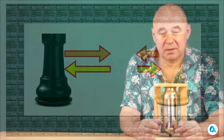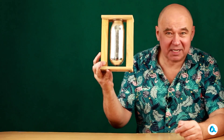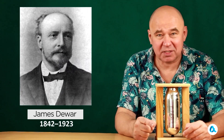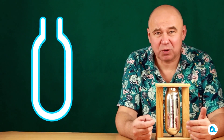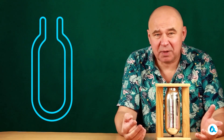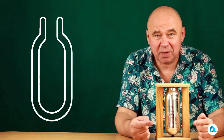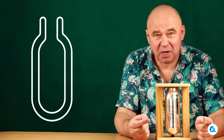Now it is time to discuss the thermos, the flask of which was invented in the late 19th century by the Scottish scientist James Dewar, in order to store liquefied gases at low temperatures and preserve their properties for extended periods of time. The flask of a thermos or Dewar vessel has a double wall. The spaces between the walls are evacuated of air, which eliminates heat conduction and convection. And the walls themselves are coated with a layer of silver on the inside in order to minimize heat transfer through radiation as much as possible.